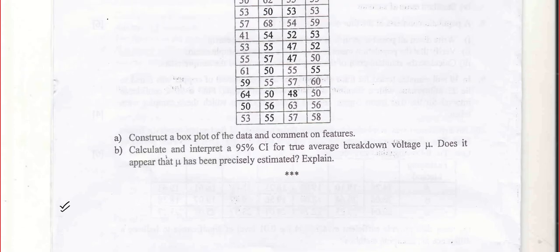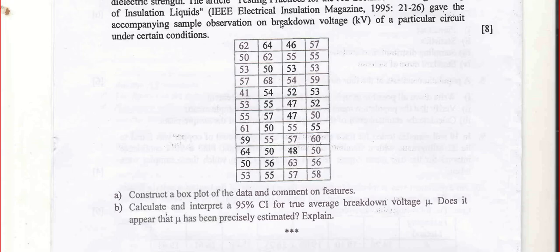I will give you one example of how to construct a box plot for simple data. First, you have to understand there are three types of data. Type 1 is raw data — numbers are simply given. This is a very good example of raw data: a lot of numbers are given. That's called raw data.